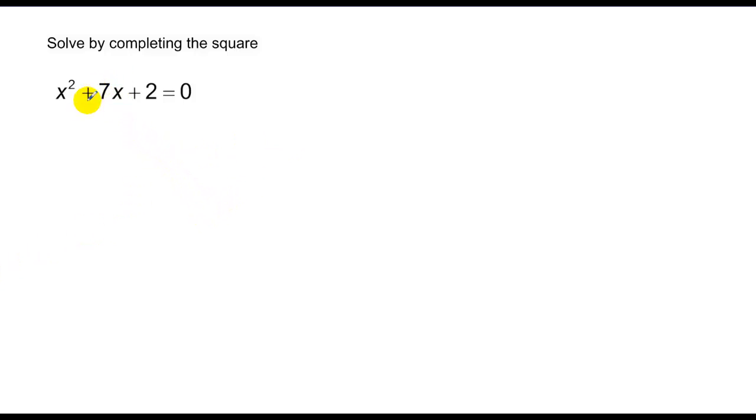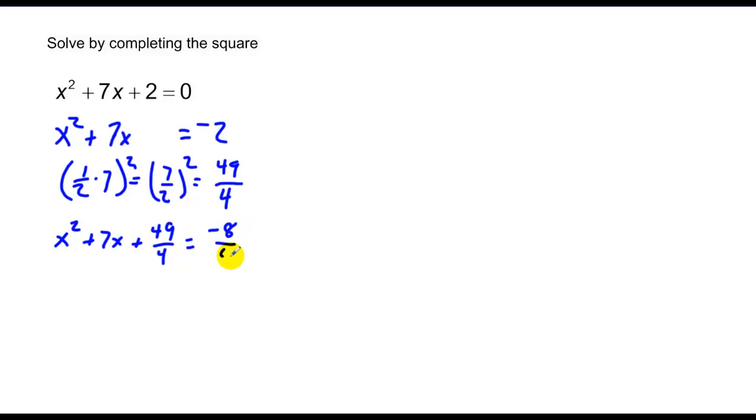The most difficult case is when we don't have an even middle term. We isolate as we have every time before. The problem is in this case half of 7 squared is equal to 7 halves squared, which is 49 over 4. And I have to add that to both sides. So I have x squared plus 7x plus 49 over 4 equals. I'm going to turn this into fourths. So that's negative 8 over 4 plus 49 over 4.